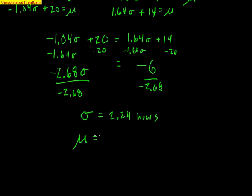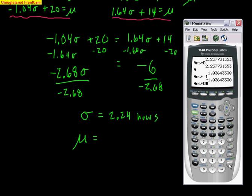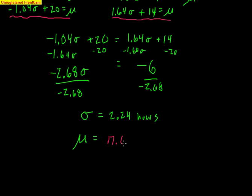Now to find mu, I plug sigma back into either equation. I'll use the first one: μ = −1.04σ + 20. I store mu as alpha D. Alpha A is positive, so I multiply by negative 1, then multiply by alpha D (the stored 2.24), and add 20. I get an average of 17.68. You could use the other equation as well — just be very careful with your stored A and B values. So the mean is 17.68 hours.